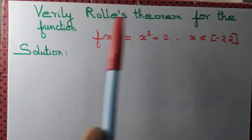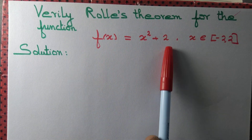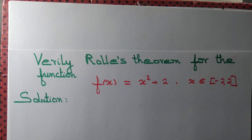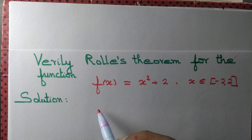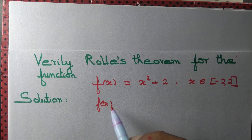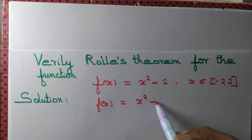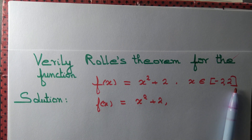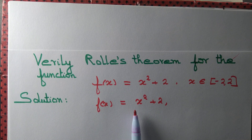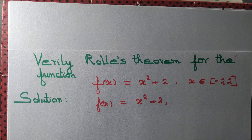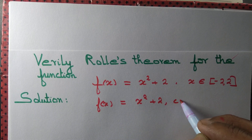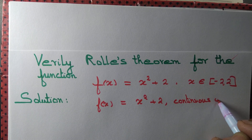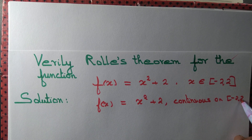Let us verify Rolle's theorem for the function f(x) = x² + 2 on the interval [-2, 2]. First of all, we are given f(x) = x² + 2. Is this function continuous on the interval [-2, 2]? We know that polynomial functions are continuous, so it is continuous on [-2, 2].